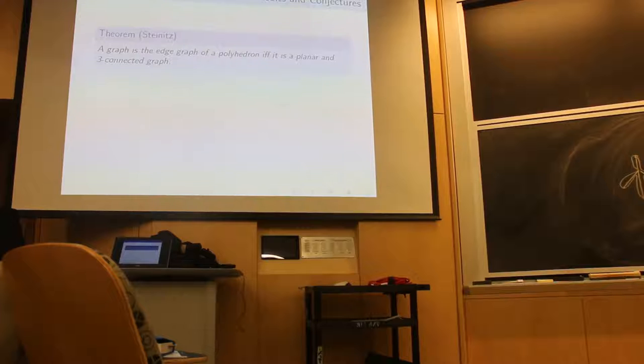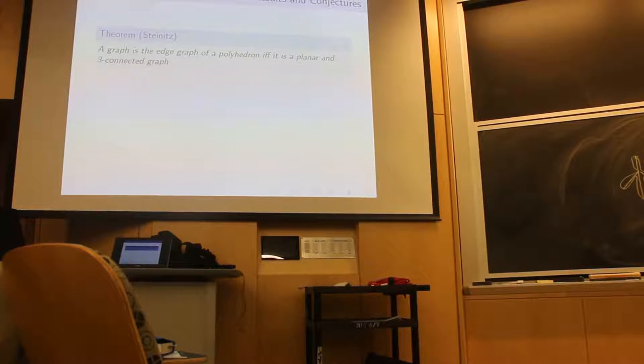The main theorem that is relevant here is Steinitz' theorem, which characterizes the graphs of convex polyhedra as all graphs which are planar and three-connected. A graph is planar if it can be drawn in the plane with no two edges intersecting. And it is three-connected if, after removing any two points from this graph, it is still connected.